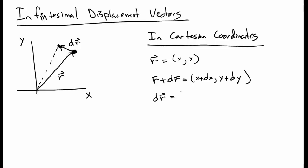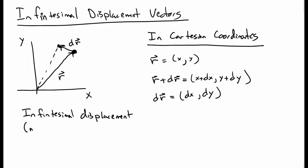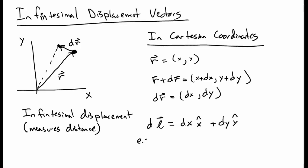Or said another way, the displacement vector between these two points, dr vector, is dx, dy. So what we really want to talk about is the infinitesimal displacement, or the infinitesimal distance between these two points. We write dl vector as dx x-hat plus dy y-hat. The distance in the x direction is just dx, the distance in the y direction is dy. That all makes sense in Cartesian coordinates.